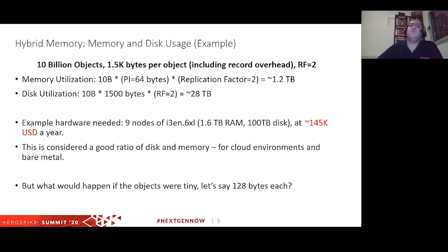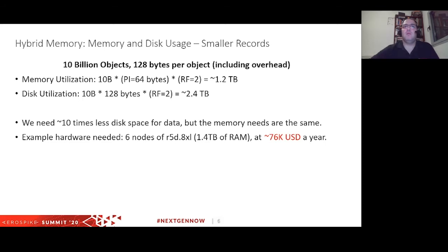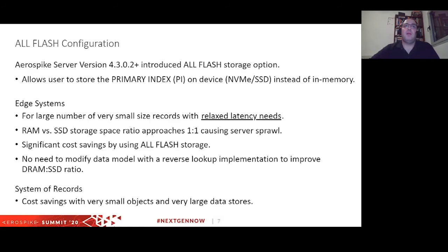But what if we had smaller objects, like 120 bytes? With 10 billion objects at 128 bytes per object, we'd still need 1.2 terabytes for the primary index, but only 2.4 terabytes for the data. We'd have 10% of the data but need half the cluster size — the R5D.8xlarge — to hold it. That might be a problem.